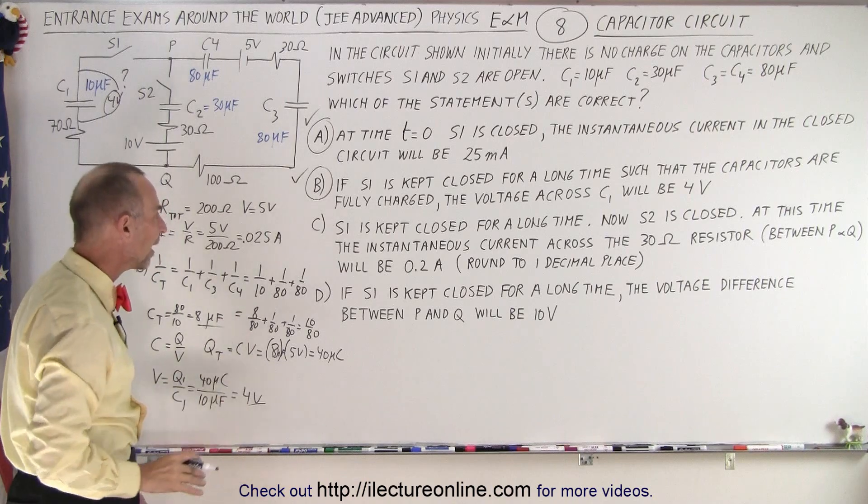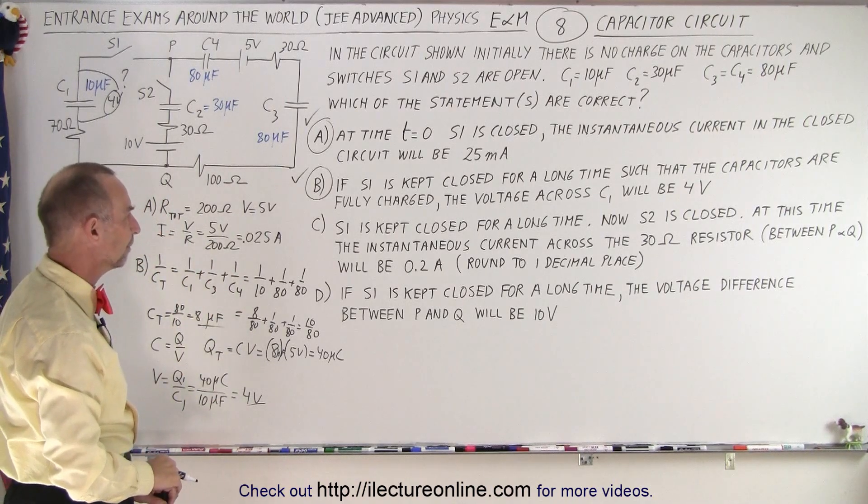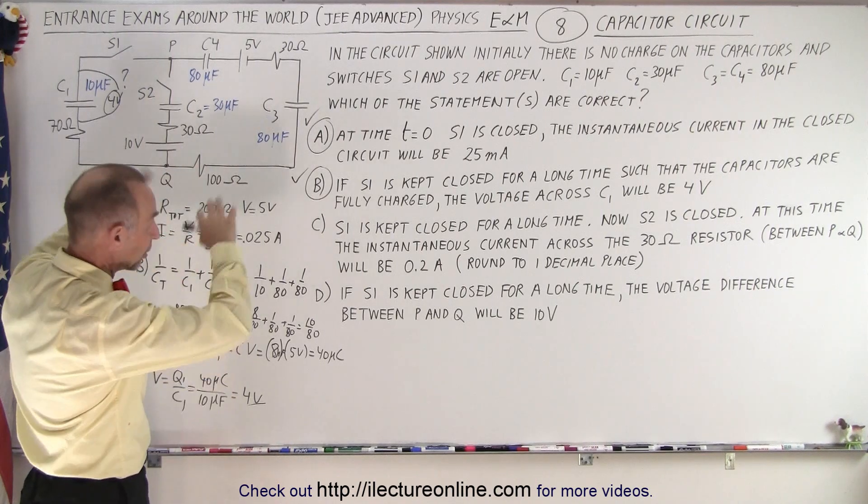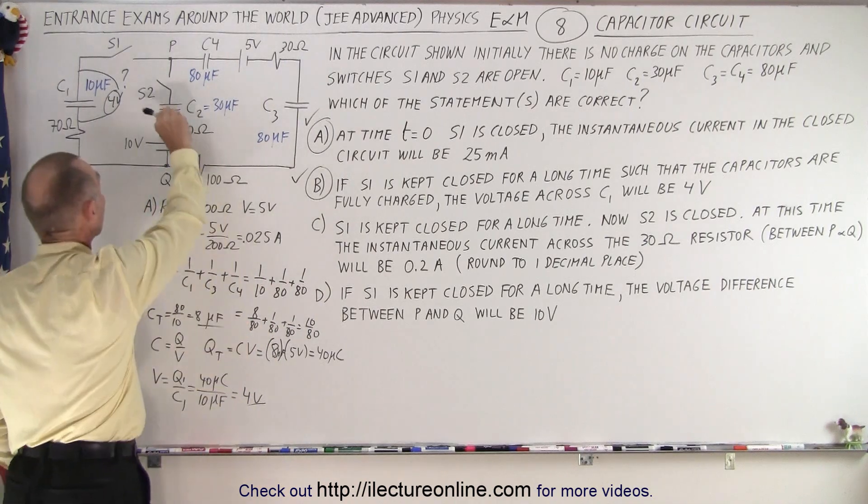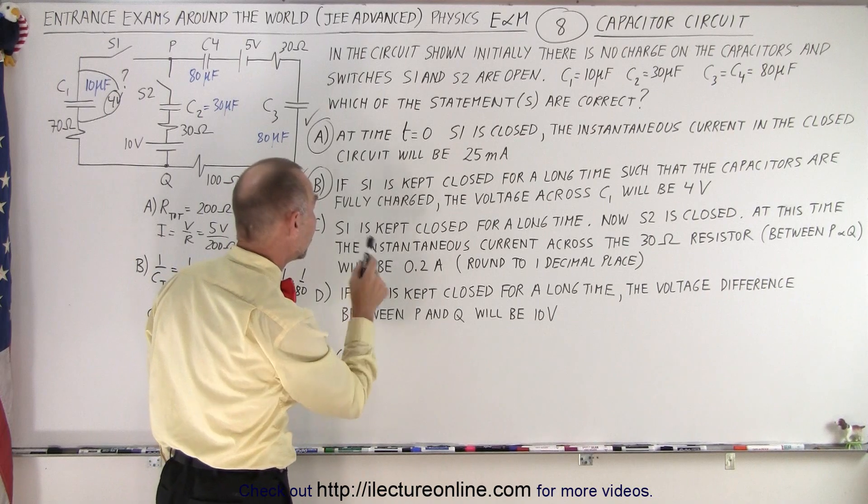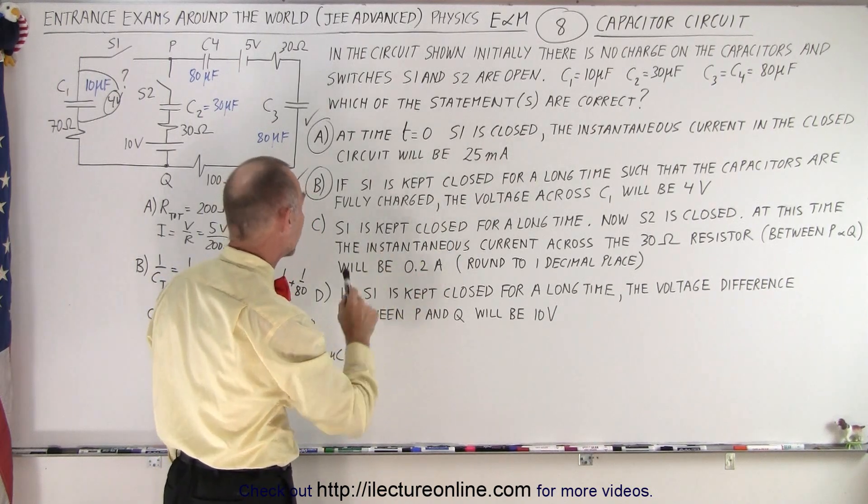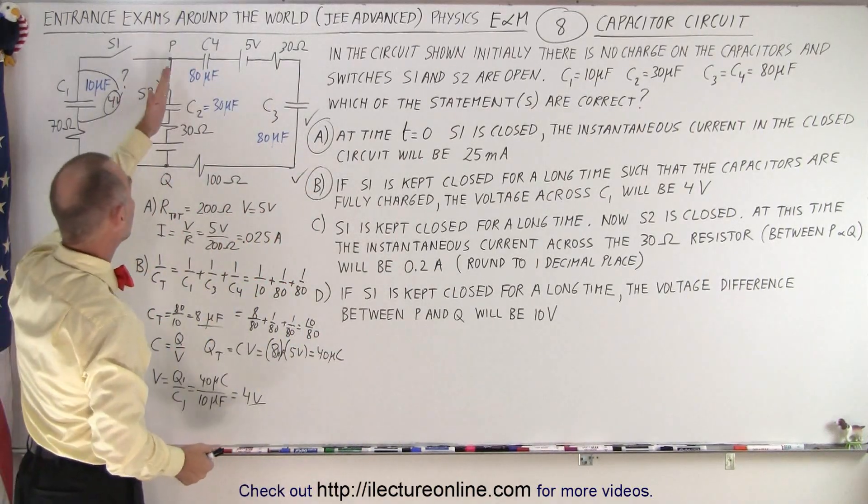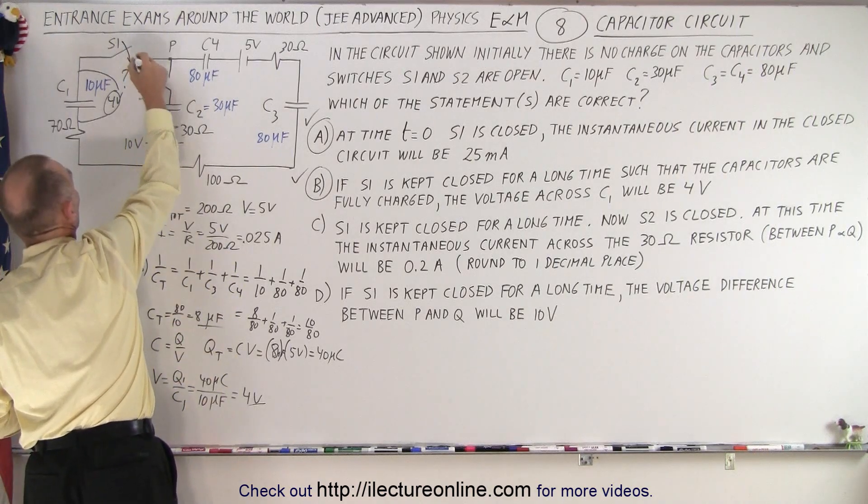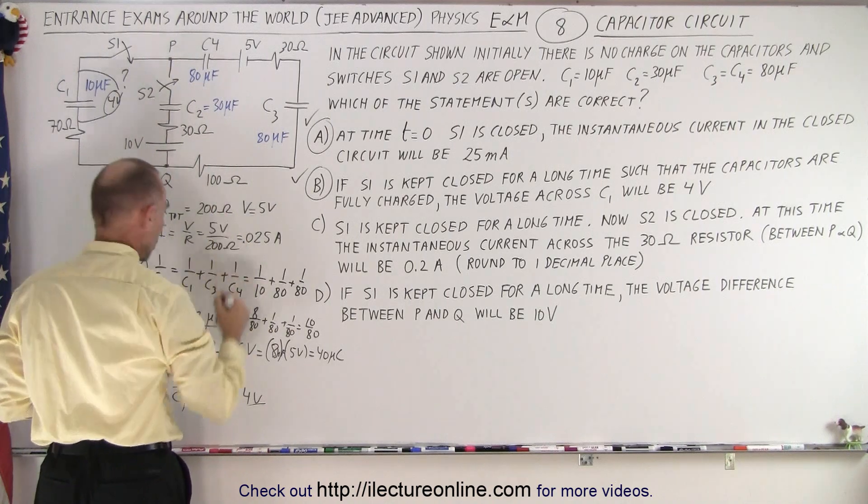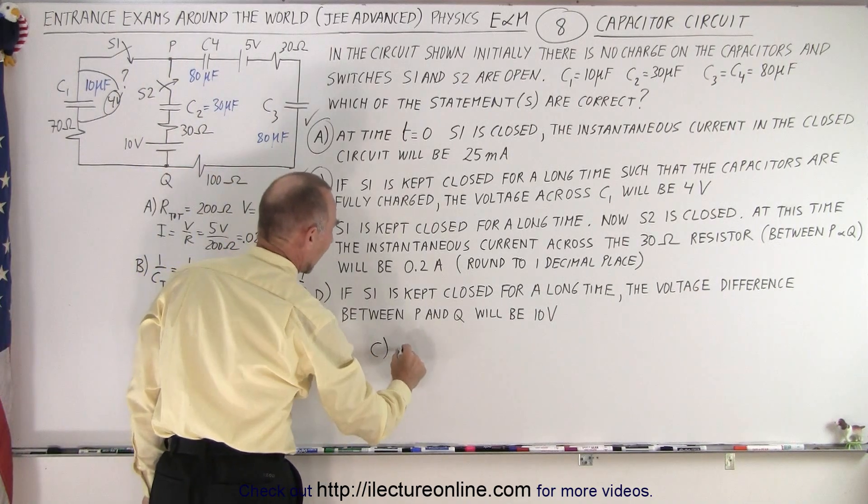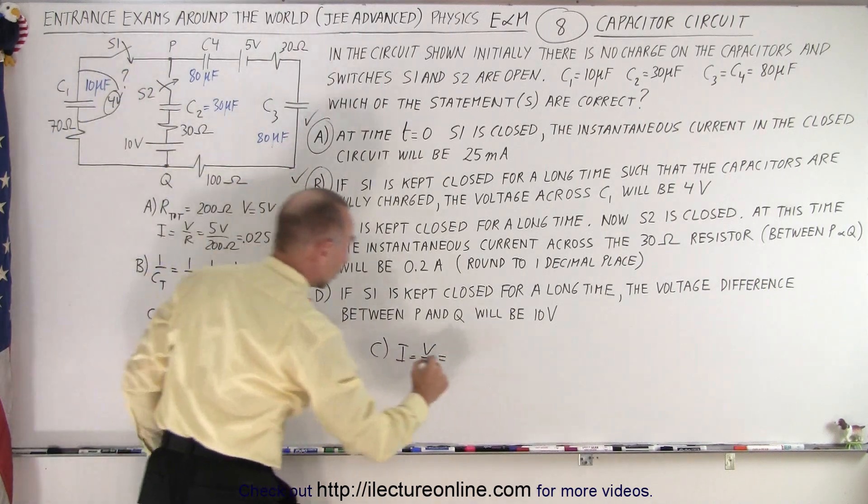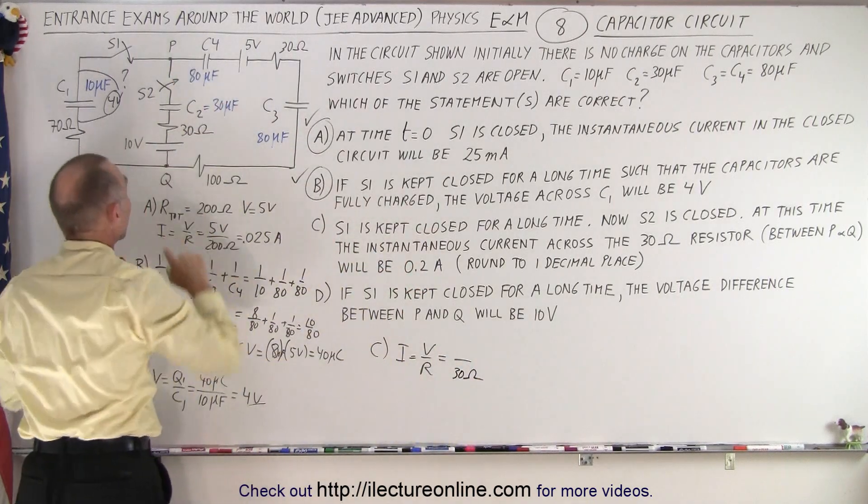You can see that this takes a little time, but you just have to work through it. Now part C, S1 has been kept closed for a long time, so all capacitors are charged. Now S2 is closed. At this time, the instantaneous current across the 30 ohm resistor between P and Q will be 0.2 amps, rounded to one decimal place. So the moment switch 2 closes, we have both switches closed, and so for part C, we know that I will be equal to V over R. The resistance on this branch is 30 ohms.